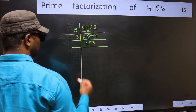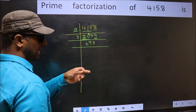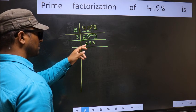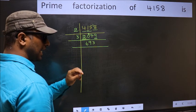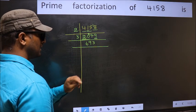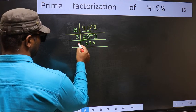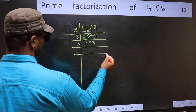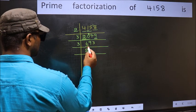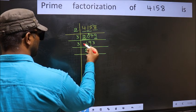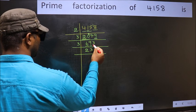Now to check whether it is divisible by 3 or not, add the digits: 6 plus 9 plus 3 equals 18, and 18 is divisible by 3. So this number is also divisible by 3, so take 3. First number 6 — when do we get 6 in the 3 table? 3 twos: 6. The other number is 9 — when do we get 9 in the 3 table? 3 threes: 9. The other number is 3.